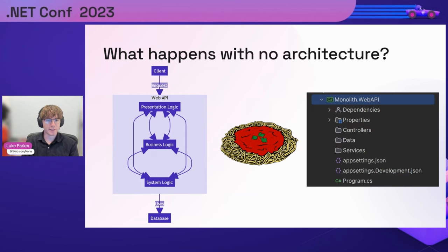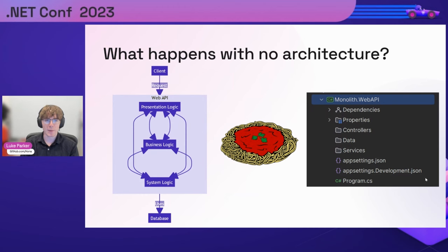So the slides went up. We had our diagram with the little mess of presentation logic, business logic, and system logic. In a C# project that might look like a few folders — controllers for your endpoints as presentation logic, a data folder as system logic, and services as business logic. In a spaghetti application, there could be business logic scattered in the controllers folder and a big mess like that.